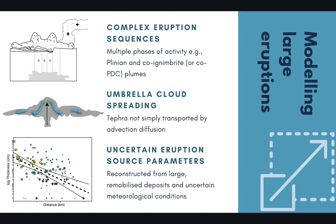And finally, because our understanding of magnitude 7 or greater eruptions is primarily based on interpreting the deposits of prehistoric eruptions, there are often large uncertainties in our estimates of eruption source parameters, and these will propagate into the uncertainty in model simulation results.